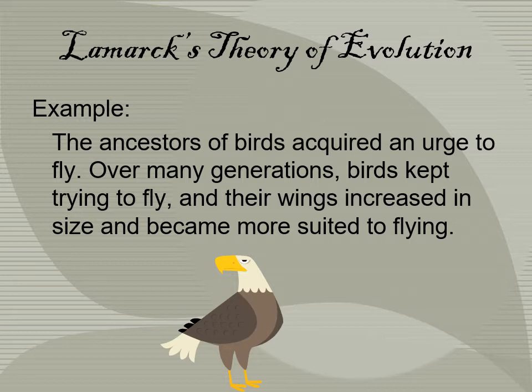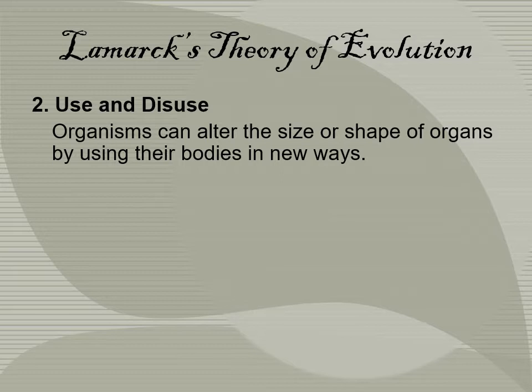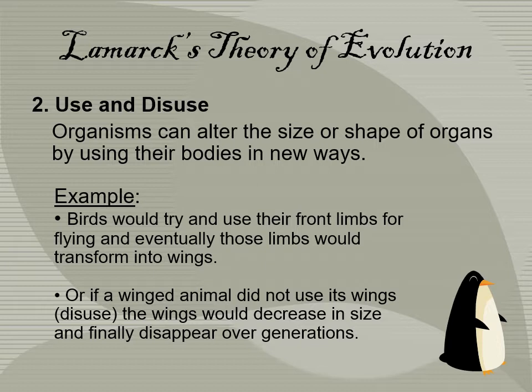Lamarck's theory of evolution says the ancestor of birds acquired an urge to fly, and over many generations birds kept trying to fly, and their wings increased in size and became more suited to flying. This states that birds were trying to fly so they turned their forelimbs into wings to make them more suited for flying. His concept of use and disuse says organisms can alter the size or shape of organs by using their bodies in new ways — for example, birds would try to use their front limbs for flying and eventually those limbs would transform into wings.